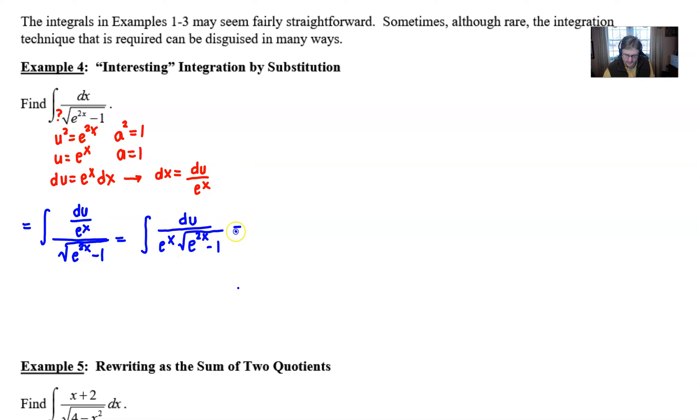And the e to the 2x is going to act as my u squared, and the 1 is going to act as my a squared. Let me write this the right way. So you essentially have a familiar old friend staring at us in the eye.